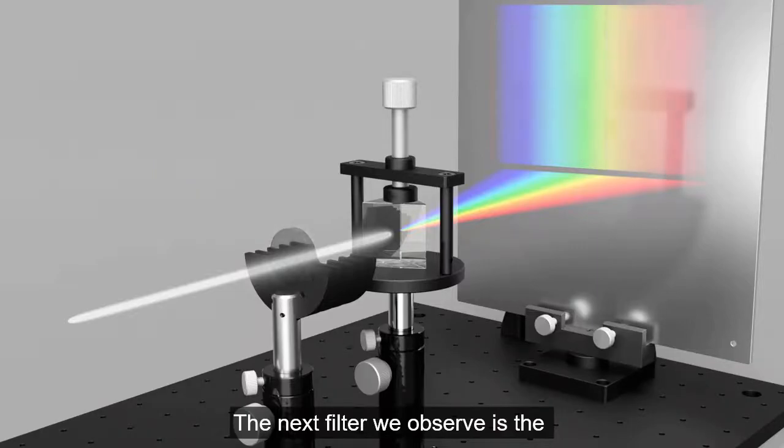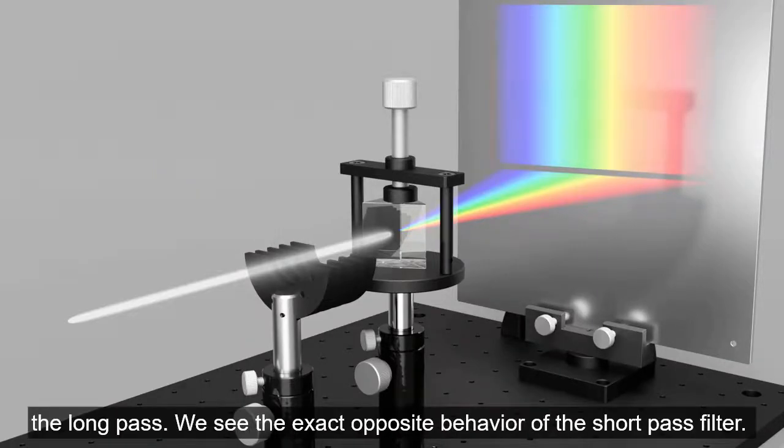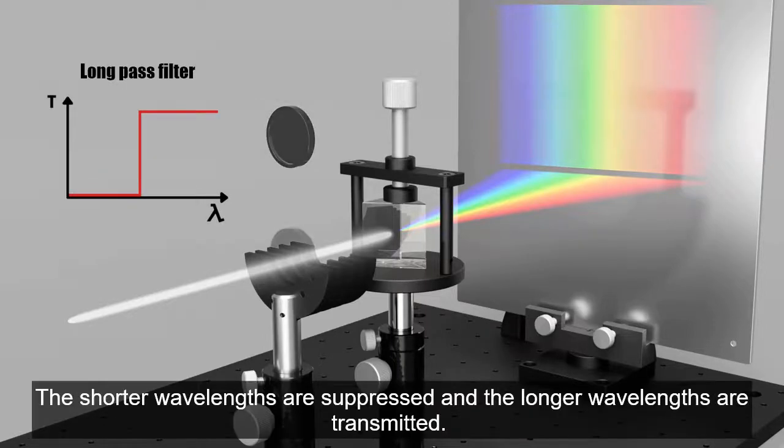The next filter we observe is the long pass. We see the exact opposite behavior of the short pass filter. The shorter wavelengths are suppressed and the longer wavelengths are transmitted.